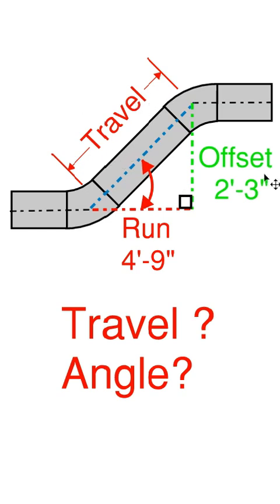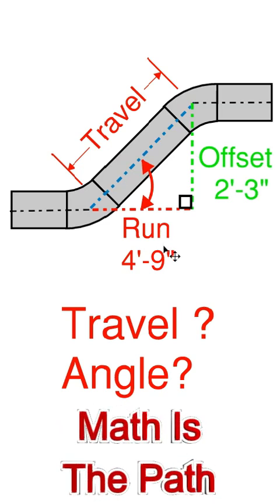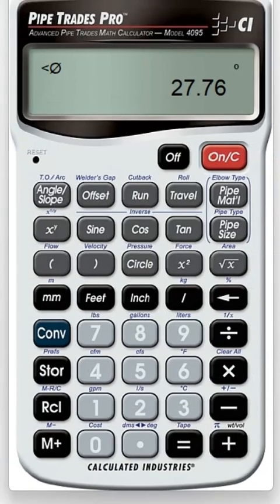So if we make our offset two foot three and the run four foot nine and we use the Pipe Trades Pro, convert, clear, let's put our sides in: two foot three inch was your offset, four foot nine inch was your run.